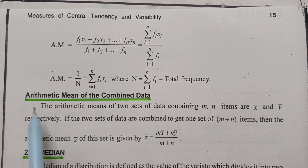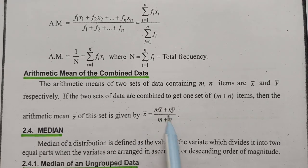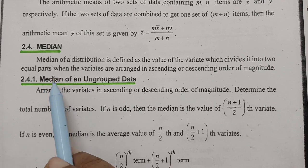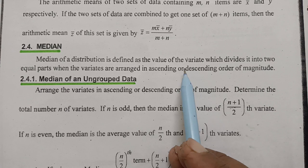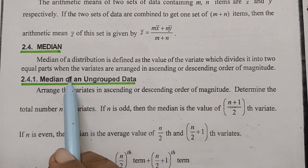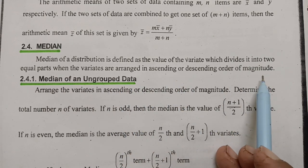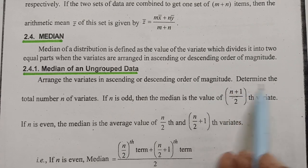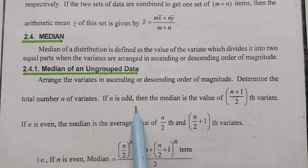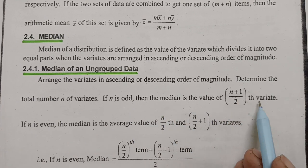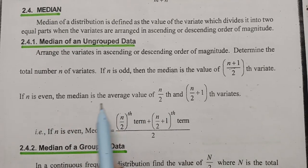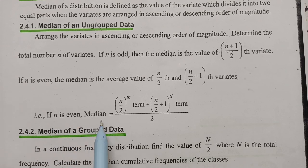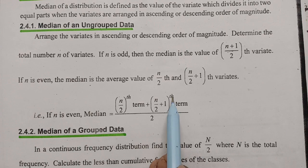For arithmetic mean of combined data, the formula is: Z̄ = (M·X̄ + N·Ȳ) / (M + N). Moving to the second measure of central tendency — the median. The median of a distribution is defined as the value of the variate which divides it into two equal parts when the variates are arranged in ascending or descending order of magnitude. For ungrouped data: if N is odd, median = value of the ((N+1)/2)th variate; if N is even, median = average of the (N/2)th and (N/2 + 1)th variates, i.e., median = [N/2 term + (N/2 + 1) term] / 2.